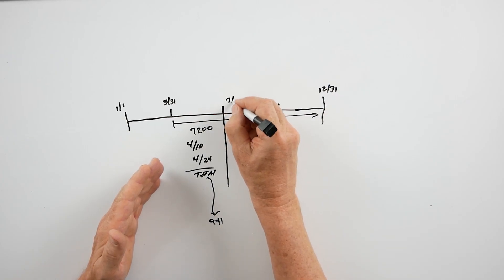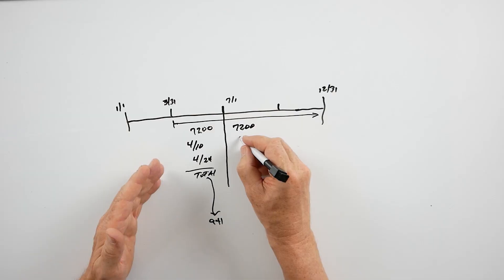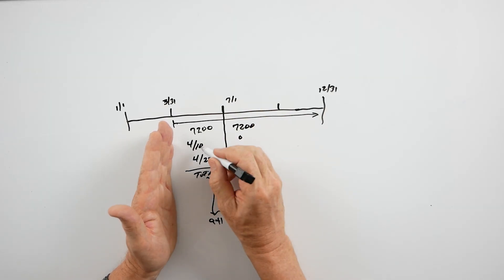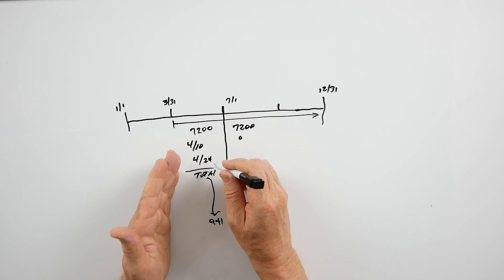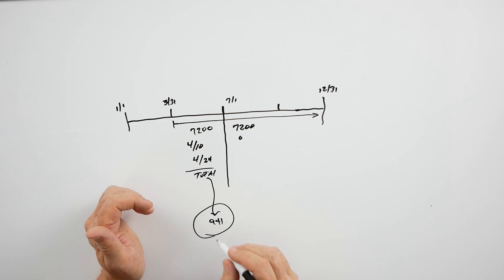Starting July 1st, when we file a Form 7200, we're going to start over with zeros for the beginning number. To step back: when I did the 4/10 example, that was the very first 7200 we had, so it only reflected that pay period. Then when I did the 4/24, I had to accumulate — per the instructions — the 4/10 payroll with the 4/24 payroll, and that just kept accumulating. But once I get to the end of the quarter, June 30th, I file the 941, and then on the 7200 I start over.